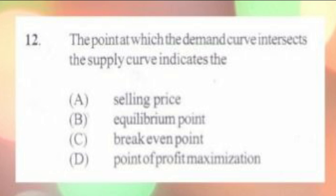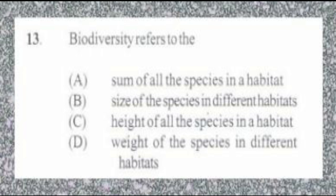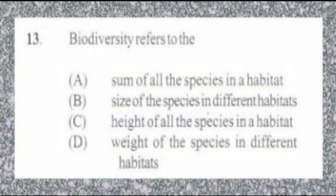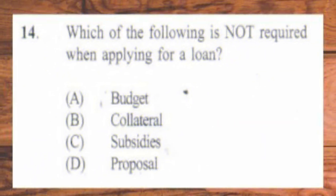Question number 13. Biodiversity refers to the: A. Sum of all the species in a habitat, B. Size of the species in different habitats, C. Height of all the species in a habitat, D. Weight of all of the species in different habitats. The answer is A, sum of all the species in a habitat. Question number 14. Which of the following is not required when applying for a loan? A. Budget, B. Collateral, C. Subsidies, D. Proposal. The answer is C, subsidy. Of course, the subsidy is a grant from the government.